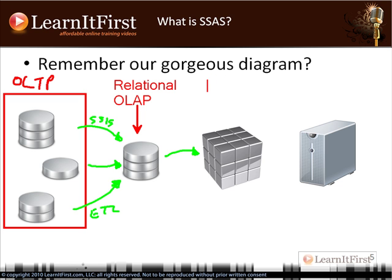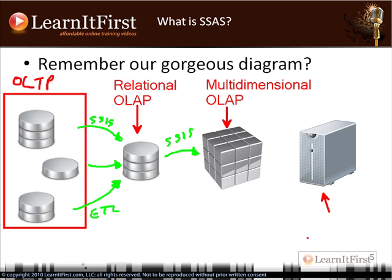Now we populate our cube — we have our multi-dimensional OLAP over here, and this is where Analysis Services fits. The tool we use to load it is also SSIS, but this time we're processing the cube; we're not just raw-loading data like we were with the previous ETL process. On the right-hand side we have our reporting server — depending on your variation of this diagram, that could be the client directly accessing the multi-dimensional OLAP, but generally it will be a report server so clients have a single point to run previously stored reports, something like Reporting Services.